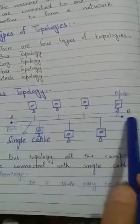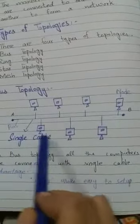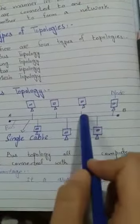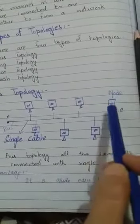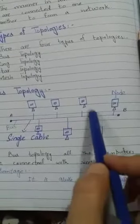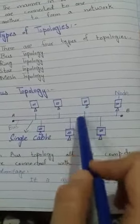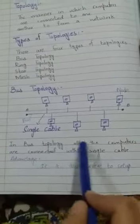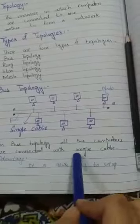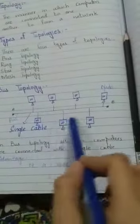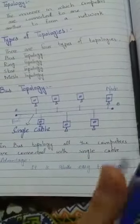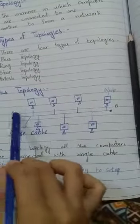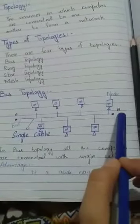From point A to point B, this is a single cable and other computers are connected with it. This is a node. Node is the basic computer which provides the information and network to the other computers. In bus topology, all the computers are connected with a single cable, and data is transferred from this cable from point A to point B.